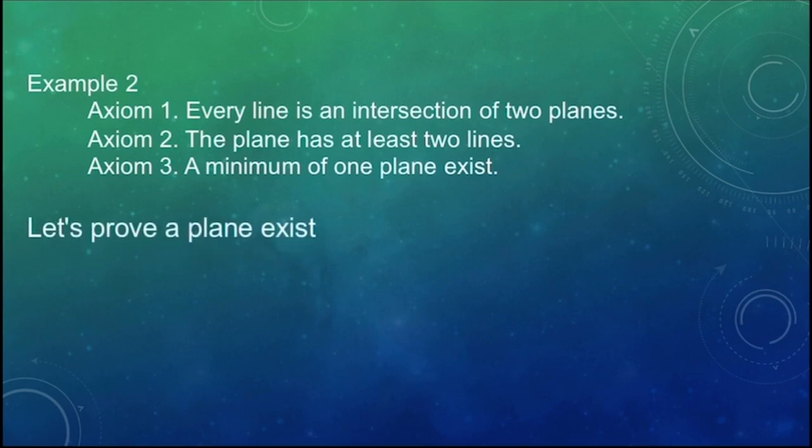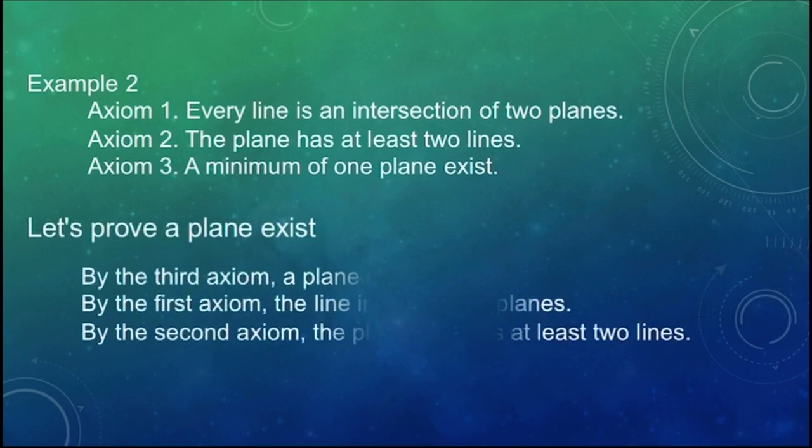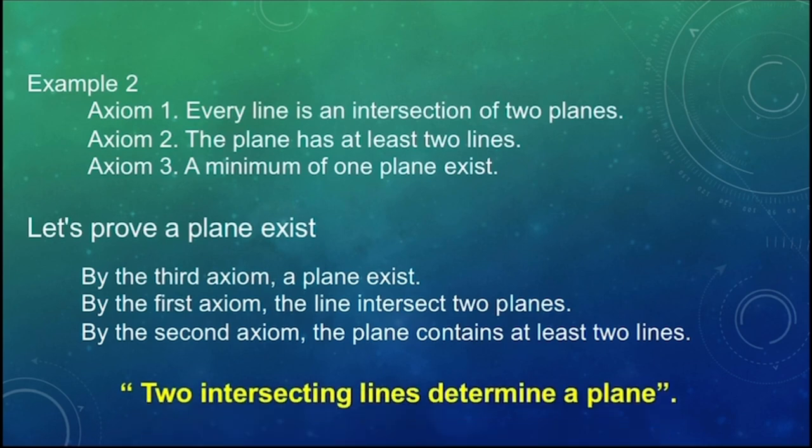For our explanation, let's prove a plane exists. By axiom 3, a plane exists. By the first axiom, the line intersects 2 planes. By the second axiom, the plane contains at least 2 lines. Therefore, if 2 lines intersect, then exactly 1 plane contains both lines. This proves the theorem that states 2 intersecting lines determine a plane.